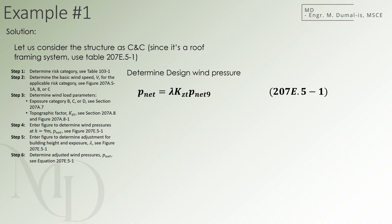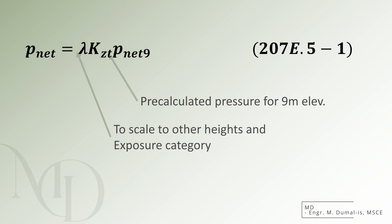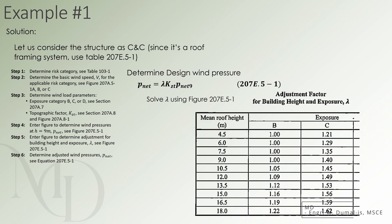So now that we have obtained all the miscellaneous parameters, we are now ready to determine the applicable structural pressure. E.5-1 allows us to use a shorthand formula for pressure calculation, represented by p-net value, wherein p-net is the product of lambda, kzat, and p-net 9. p-net 9 is a tabulation of values of precalculated pressure for a standard 9 meter tall structure in an exposure category B site building, while lambda is known as the height and exposure adjustment factor, which, as the name suggests, is a scaling factor for other building heights and exposure categories.